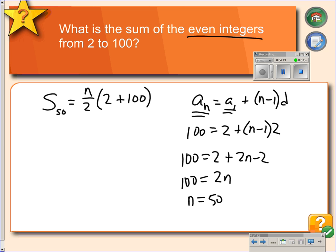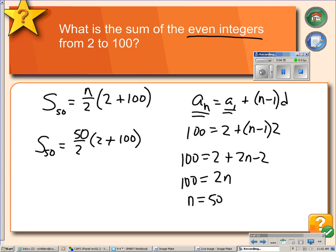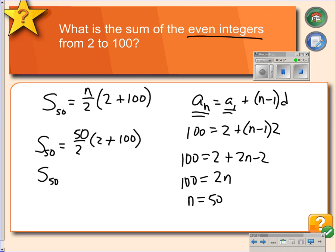So we're going to add the first 50 terms in the series. That gives us 25 pairs times 2 plus 100, which is 102. So 25 times 102 gives us a total of 2,550. So the sum of the first 50 terms in the series is 2,550.